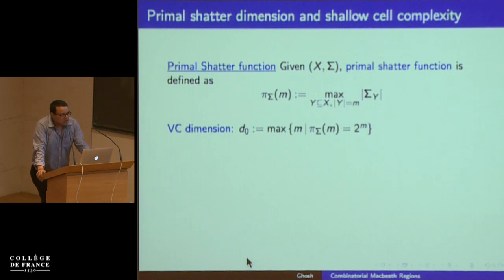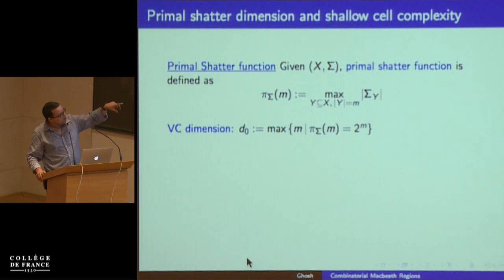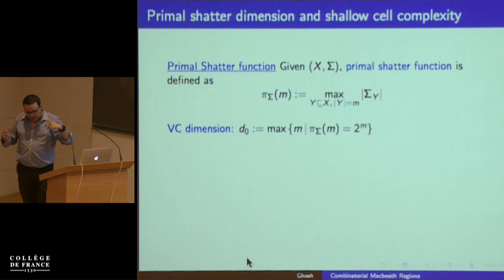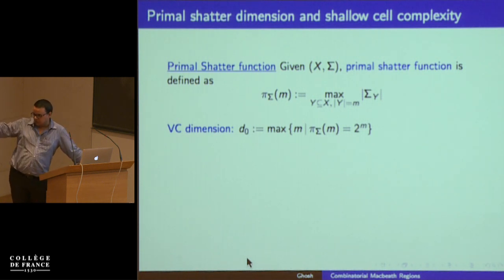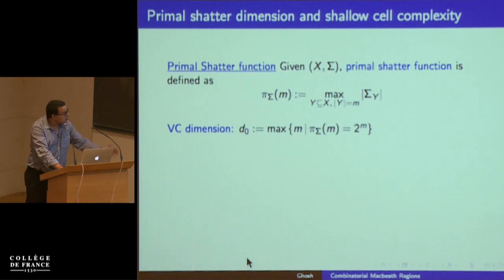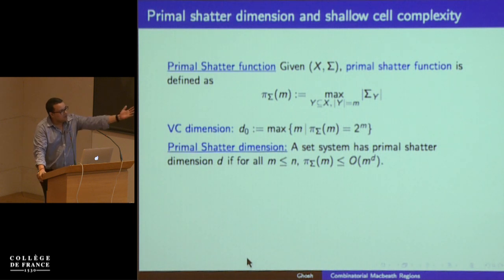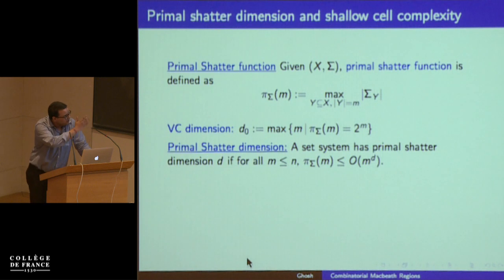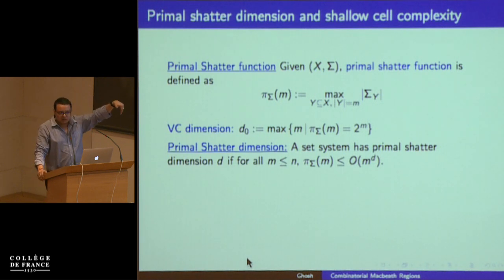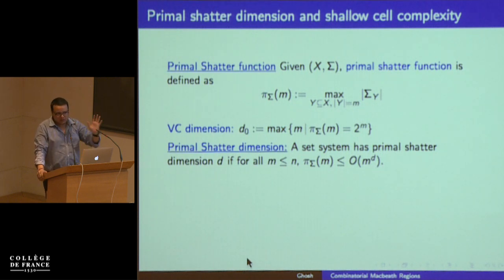The VC dimension is the maximum m such that π(sigma, m) = 2ᵐ — i.e., the maximum size subset Y such that projecting Y onto sigma generates all subsets of Y. This is called shattering the subset. A set system has primal shattered dimension D if π(sigma, m) is bounded by mᴰ. There is a famous result of Sauer and Shelah: if VC dimension is bounded by D, then primal shattered dimension is also bounded by D, and conversely, if primal shattered dimension is bounded by D, the VC dimension is bounded by D·log D — so up to a log factor they are almost the same.